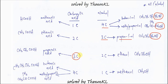Continuing with the three-carbon carboxylic acid, propanoic acid, reacting with a two-carbon alcohol. The only two-carbon primary alcohol is ethanol, which has the CH2OH group. So propanoic acid reacts with ethanol to form one ester.